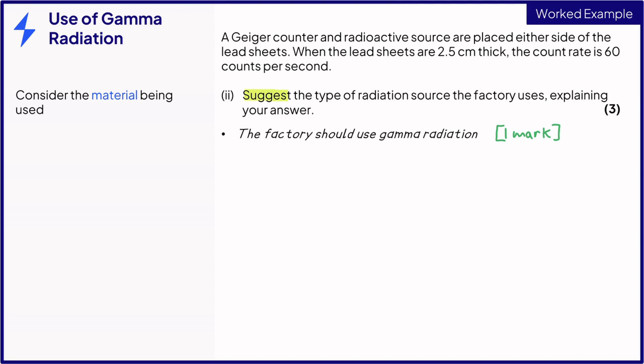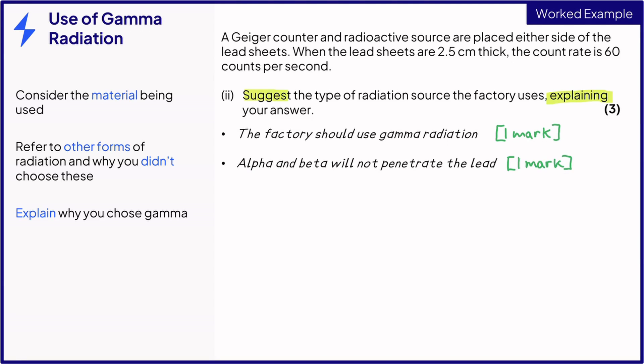Now, let's explain why we didn't choose the other forms of radiation. Neither alpha or beta can penetrate even thin lead. This statement gains mark two. And finally, we need to justify our choice of gamma. We chose gamma because it can penetrate lead, or we can say that it isn't fully absorbed by lead. These mean the same thing. That's mark three.